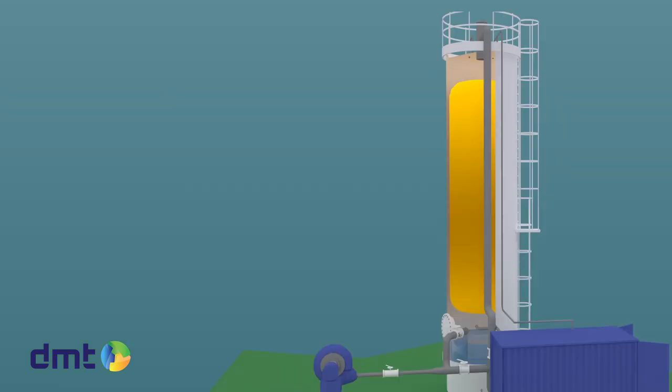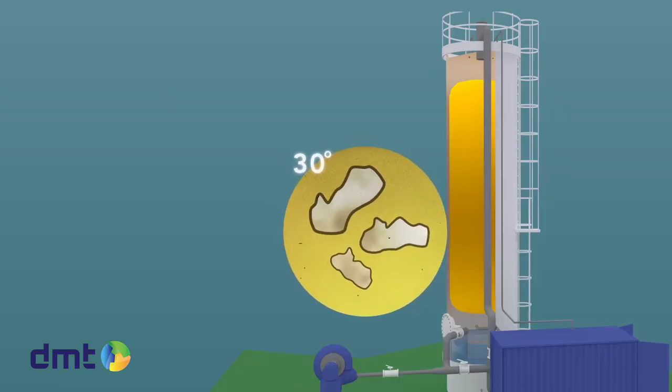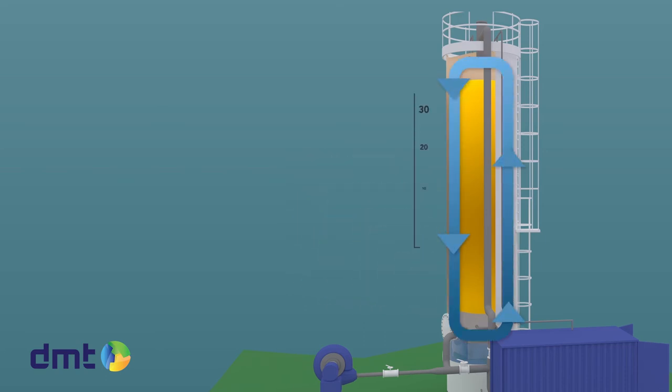The bacteria operate best in a temperature of 30 degrees Celsius. To ensure the best possible conditions, the circulation water is heated by using a heat exchanger, which is regulated by a thermometer in the column.